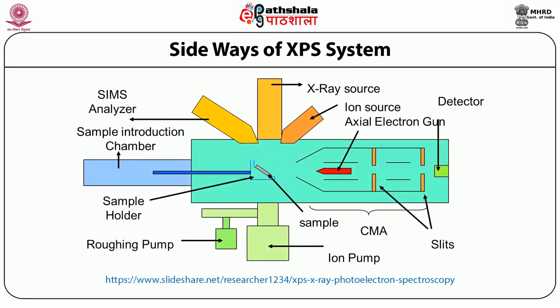A slide shows a side view of XPS where the position of the parts of XPS can be seen. The sample is introduced through a chamber in contact with the outside environment. It will be closed and pumped to low vacuum. After the first chamber is at low vacuum, the sample is introduced into the second chamber in which a UHV environment exists.